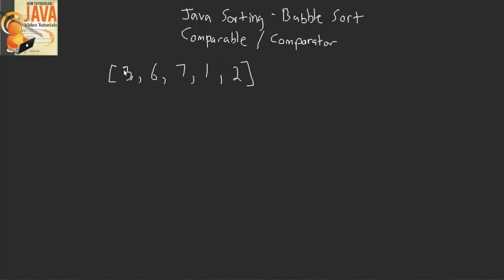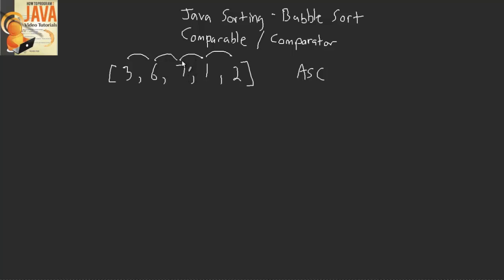How does bubble sort do it? It works its way through the list and compares each pair of numbers, swapping them if they're in the wrong order. It goes through and swaps, resets back to the beginning, and keeps going until it has gone through the list without performing a single swap. So the first comparison is three and six. Since we're sorting in ascending order — smallest to biggest — is three smaller than six? Yes, so there's no need for a swap. Is six less than seven? Yes, so no swap. Is seven less than one? No — seven is bigger than one, so we need a swap.